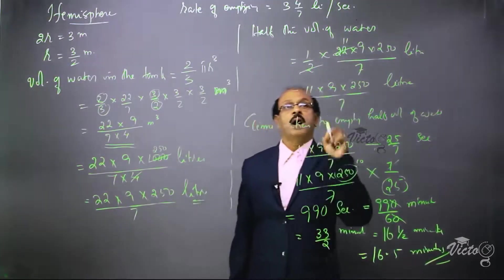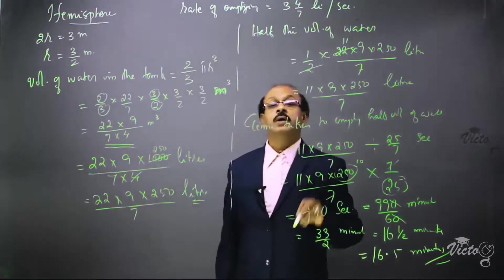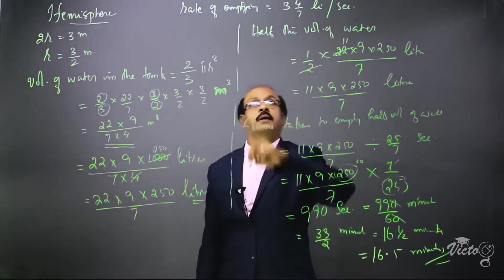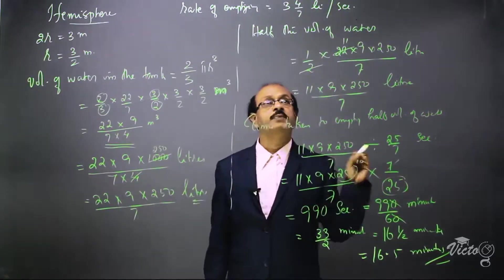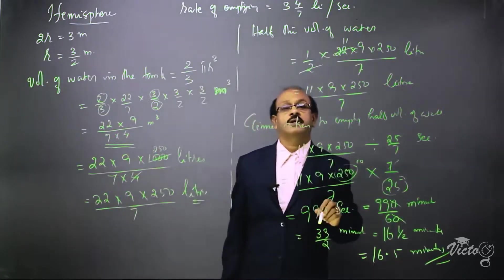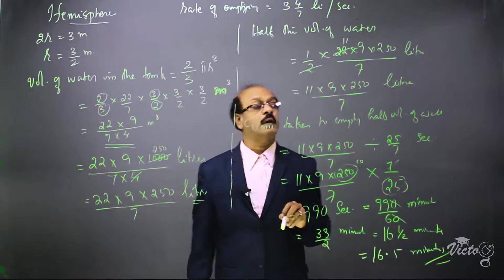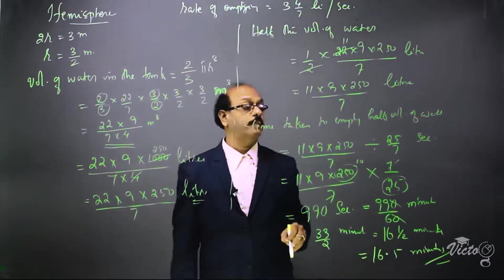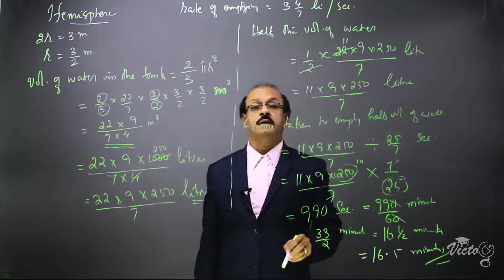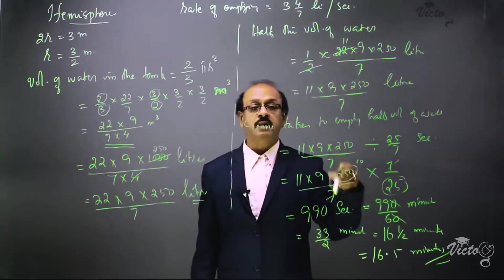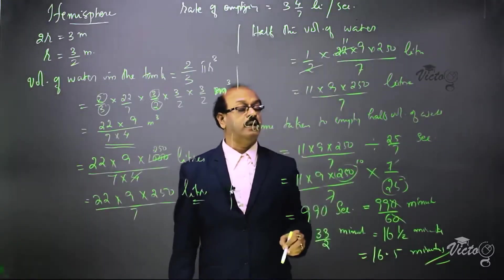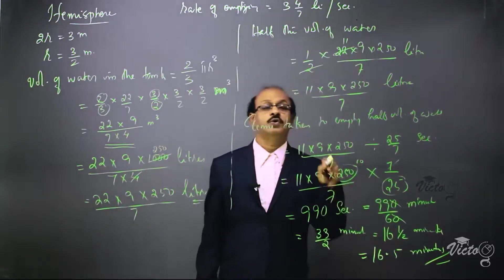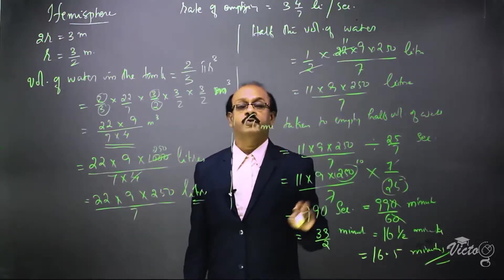So we take half the volume of water, convert it into liters, and find the time taken to empty it by dividing by the rate. In one second, 3 and 4 by 7 liters, that is 25 by 7 liters of water is emptied. Dividing half the volume by 25 by 7 — multiplying by the reciprocal 7 by 25 — and simplifying gives 990 seconds, which converts to 33 by 2 minutes, that is 16.5 minutes. This is the time taken by the pipe to empty half the volume of water in the hemispherical tank.